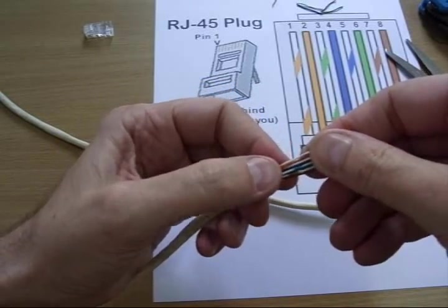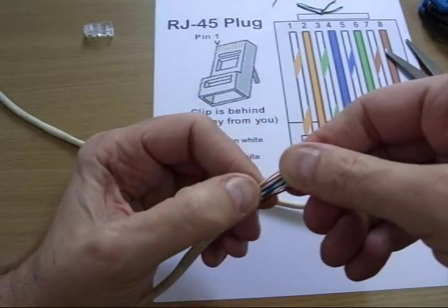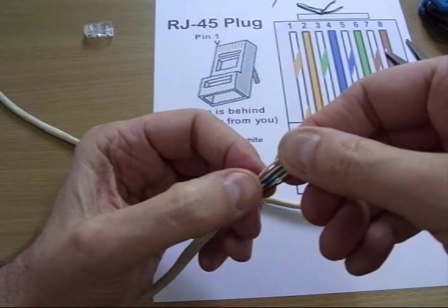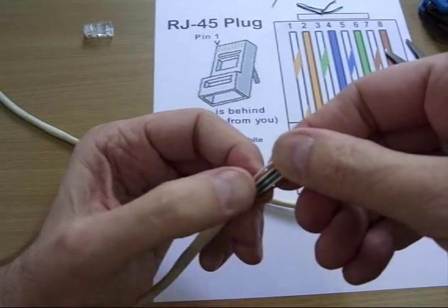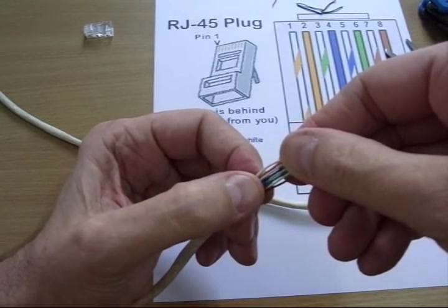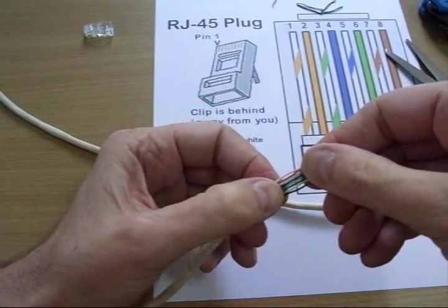Okay, checking the sequence one more time. Orange on white, then orange, green on white, then blue, then blue on white, then green, then brown on white, then brown.